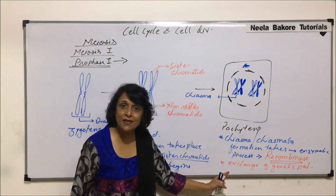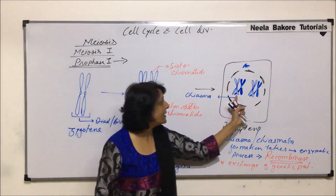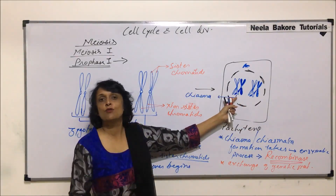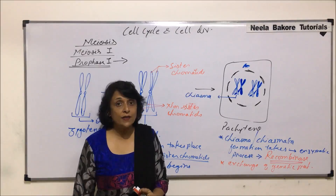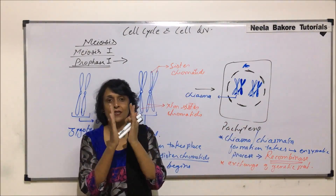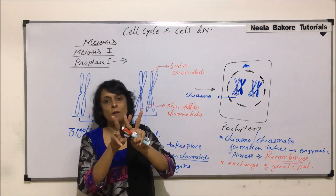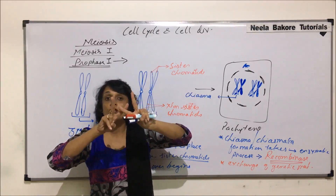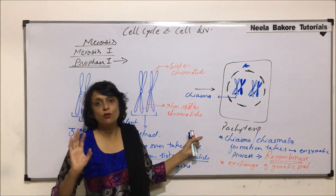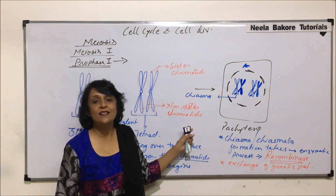Now, exchange of genetic material has taken place — so is there a need for these two chromosomes to stay together? They were together so that crossing over could take place. Now that crossing over is complete, there is no need for them to stay together. The structure holding them together was the synaptonemal complex. So by the end of pachytene, the synaptonemal complex will start to dissociate. The chromosomes will start moving away from each other but will still remain attached at the crossed-over part. In the next stage, diplotene, we would start seeing exactly what happens.